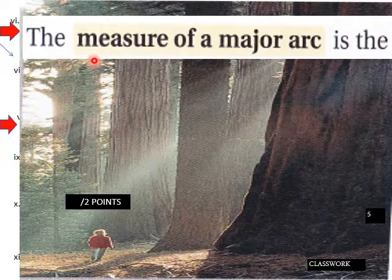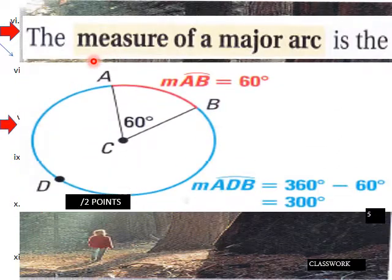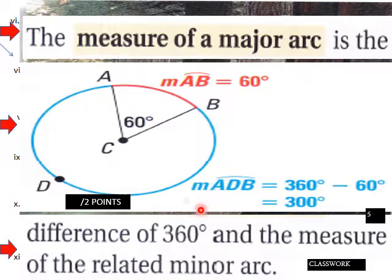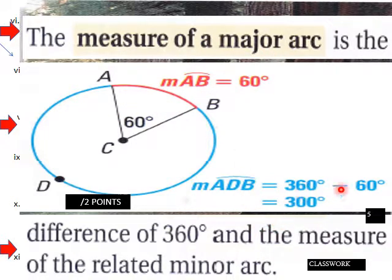The measure of a major arc is the difference of 360 and the measure of the related minor arc. So the measure of the major arc equals 360 minus the minor arc — in this case, 360 minus 60 equals 300 degrees.